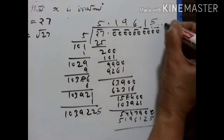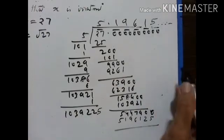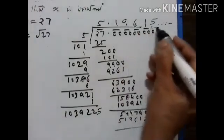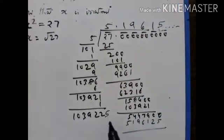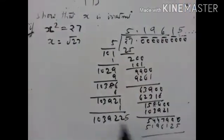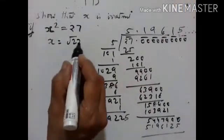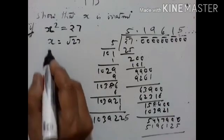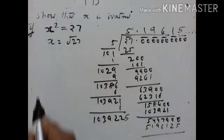This is non-terminating and non-recurring. Therefore, square root of 27 is irrational, and x is irrational.